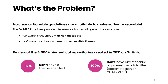The problem, however, is that there are no agreed-upon actionable guidelines for making biomedical research software reusable. The FAIR Principles for Research Software published in 2020 do provide a framework for optimizing the reusability of research software, but by design they provide only general instructions.